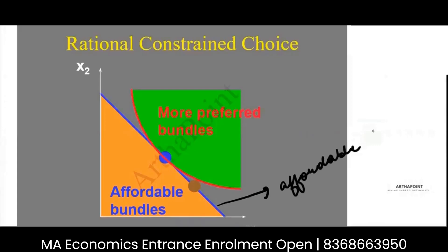The budget line shows all the bundles that are affordable. The bundles that are affordable are either below the budget line. If they're below the budget line, then they're not consuming your entire income.